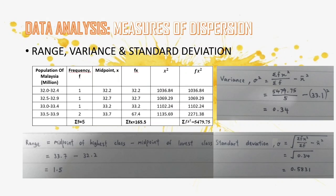For the measure of dispersion, we find the range, variance, and standard deviation. The range is the midpoint of the higher class minus the midpoint of the lower class, which is 1.5 million — the difference between the highest and lowest population of Malaysia. The variance is 0.34 and the standard deviation is the square root of variance, which is 0.5831 million. We can observe that the dispersion of Malaysia's population is very consistent because the standard deviation is quite small.